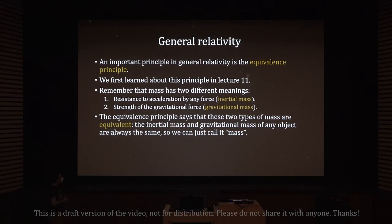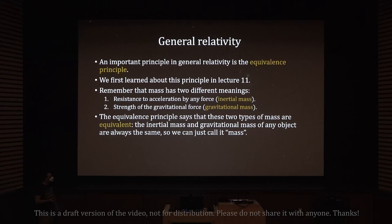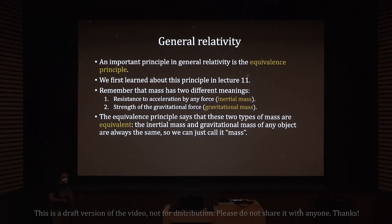In Newtonian gravity, the force of gravity is proportional to the product of the masses of the two objects. The equivalence principle says that inertial mass and gravitational mass are equivalent — they are always the same for any object. So we can just call it mass; I don't need to distinguish between 200 kilograms of inertial mass or gravitational mass.